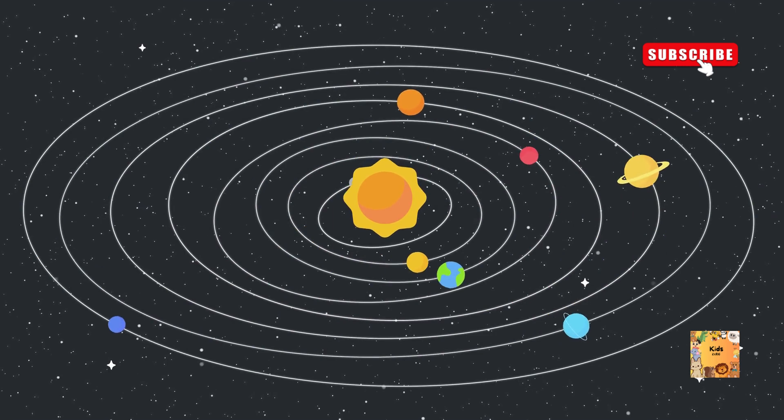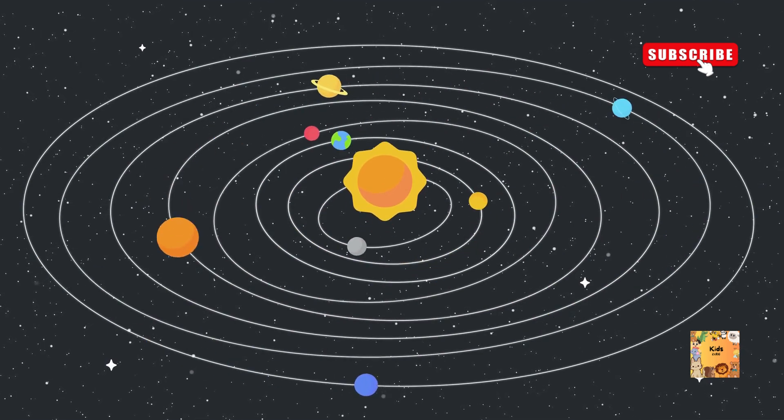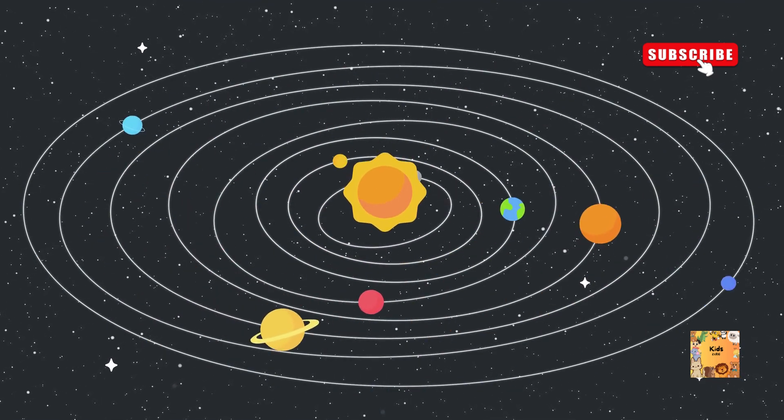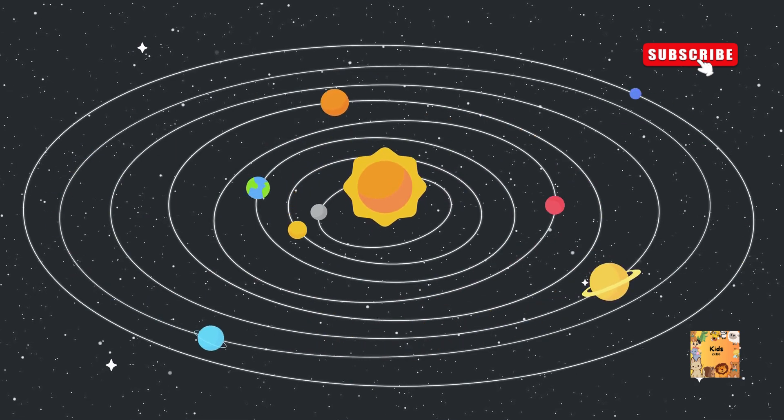Asteroids. Asteroids are rocky objects that orbit the sun, mostly found in the asteroid belt located between Mars and Jupiter.